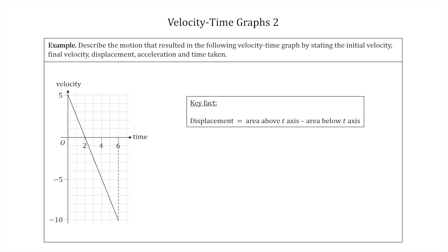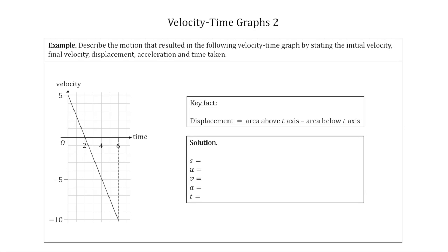Let's start filling in the table with the information we know straight away. We want to find the five variables: s, u, v, a, and t. U, the initial velocity, you just read right off the graph — when time is zero, velocity is five. Similarly, v, the final velocity, is minus ten, and t, the time taken, is six seconds — we can read all of these straight from the graph. So it's only s and a that are tricky.